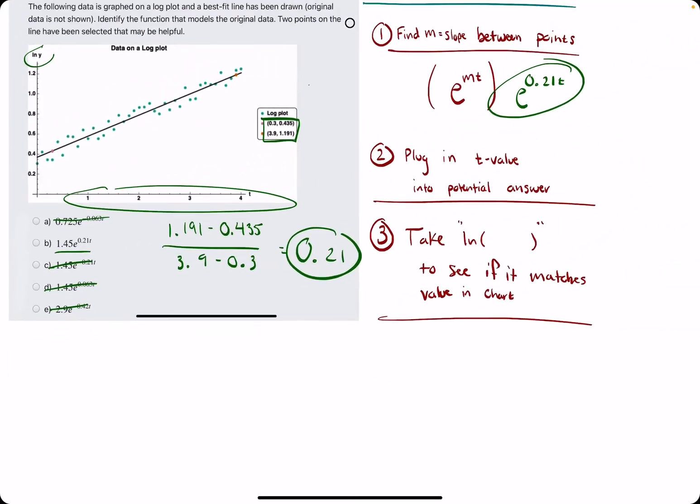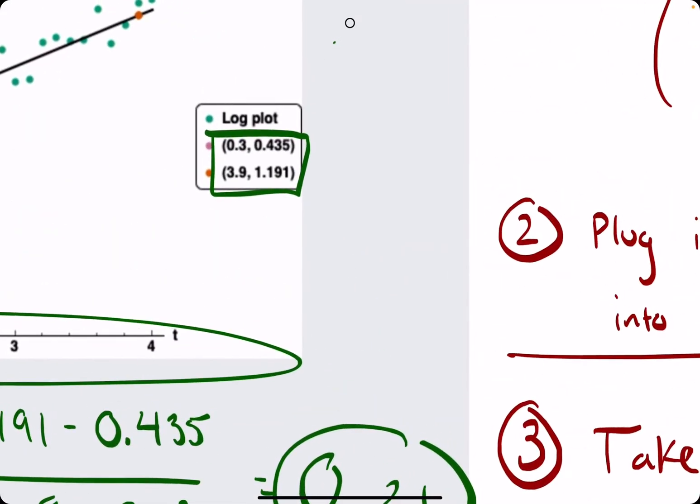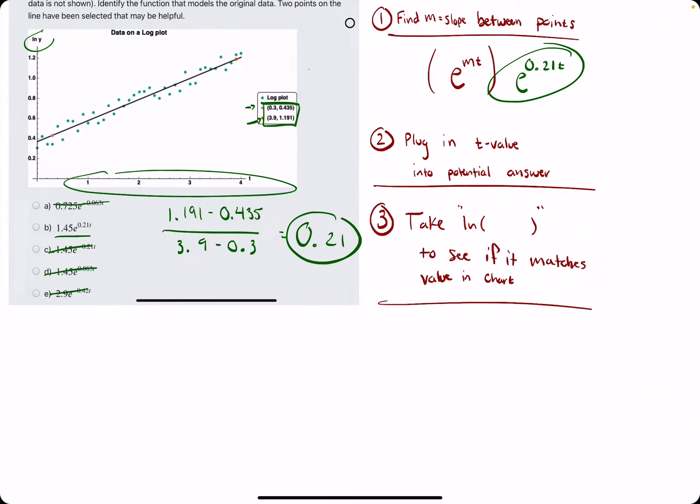Let's plug in a t value into the potential answer. We'll plug in one of these t values here, or x values. Let's go ahead and plug in 3.9.